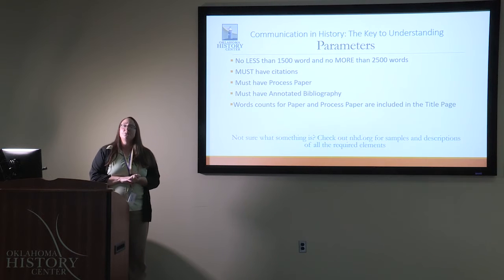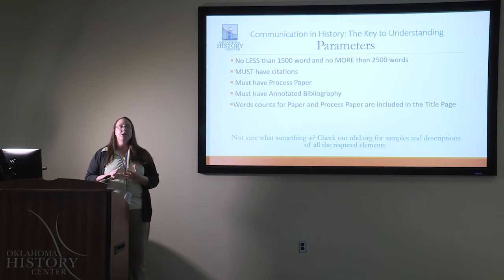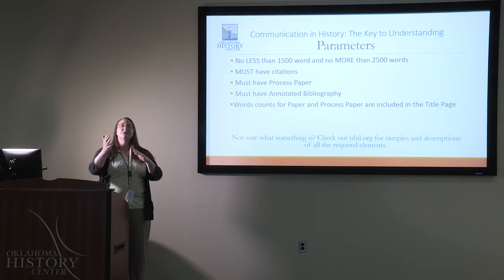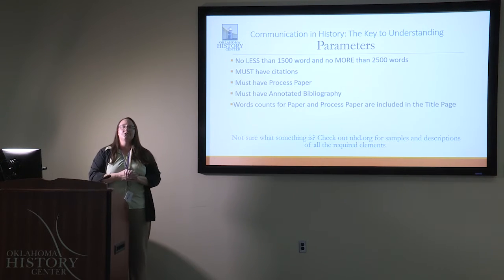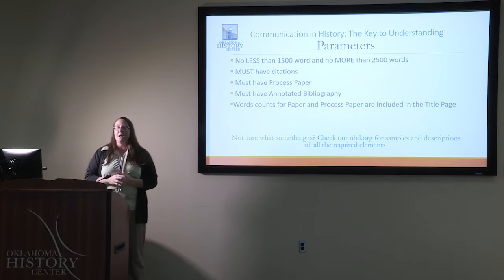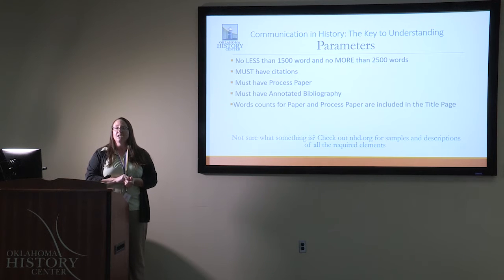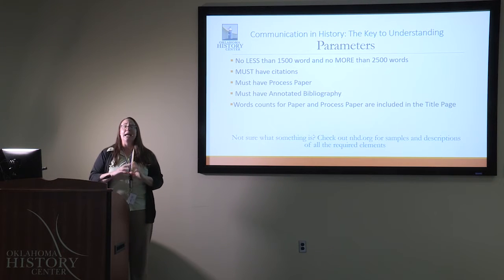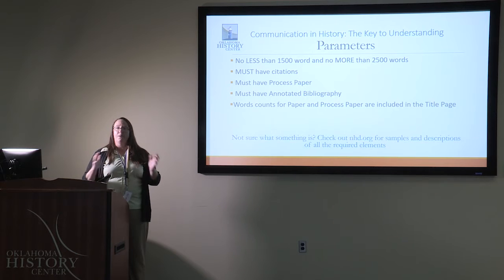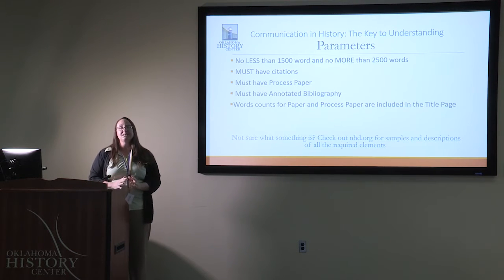There are three parts to that rubric that you probably want to keep in mind. The first is the parameters. If you've ever seen a floor competition in gymnastics where the gymnast steps out of bounds and they get a big deduction to their score, that's what a parameter is. So you want to make sure that you're inside the parameters on your paper and your website. For the paper, you can't use less than 1,500 words or more than 2,500 words. You must have citations and you must have a process paper and an annotated bibliography. Those are all requirements, and if you miss out on those, it will deeply impact the score that you're able to receive.